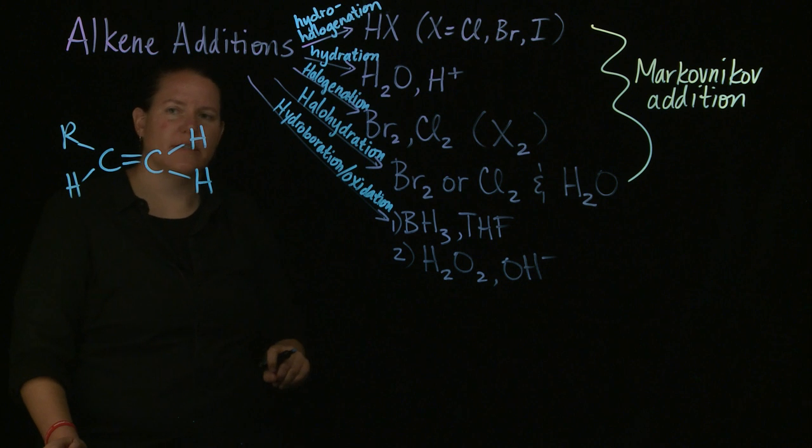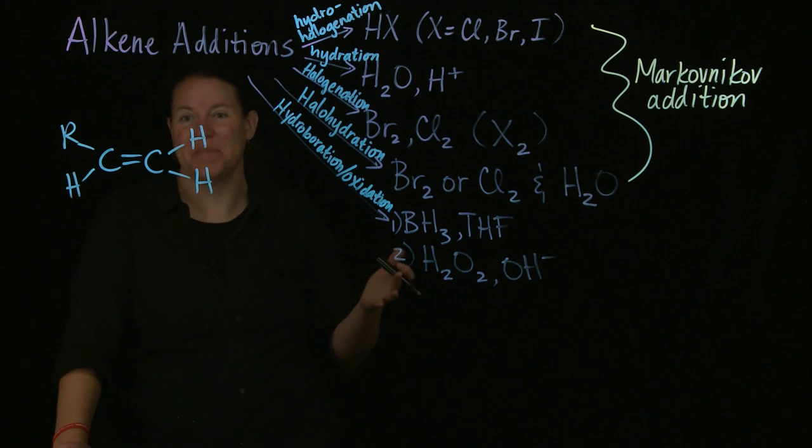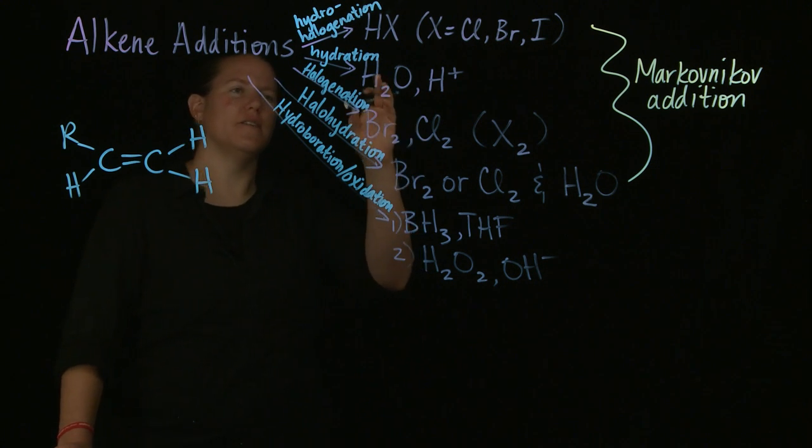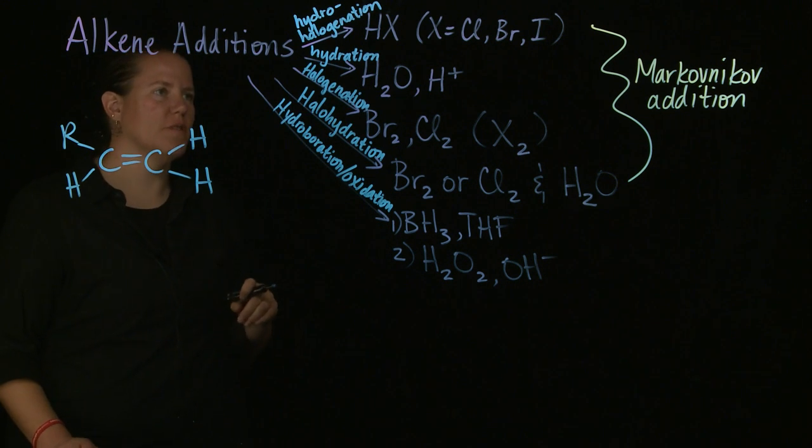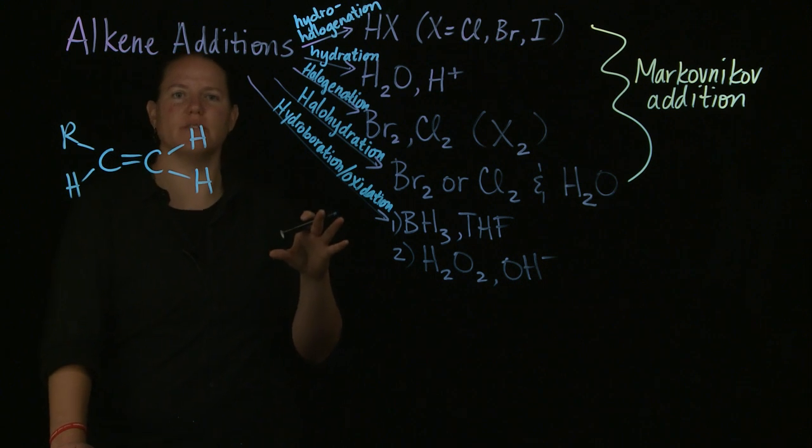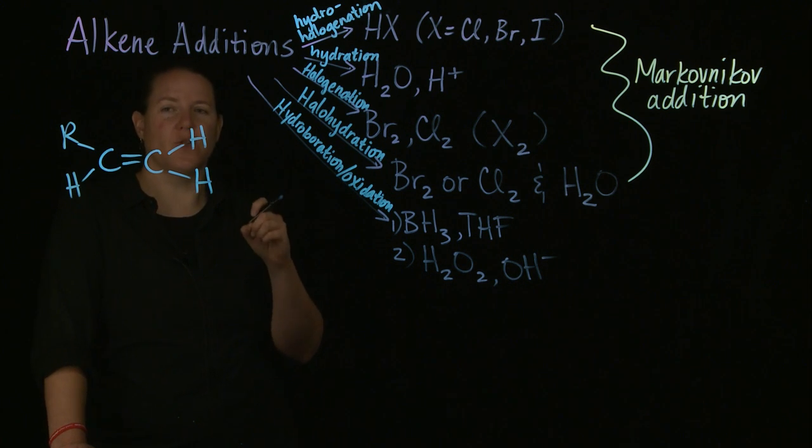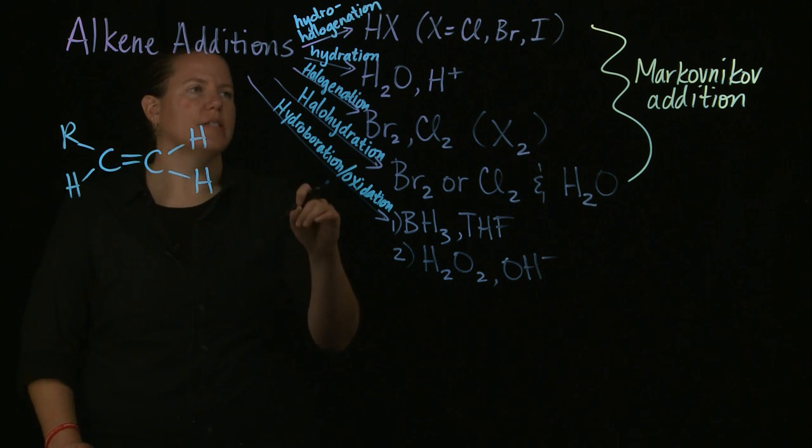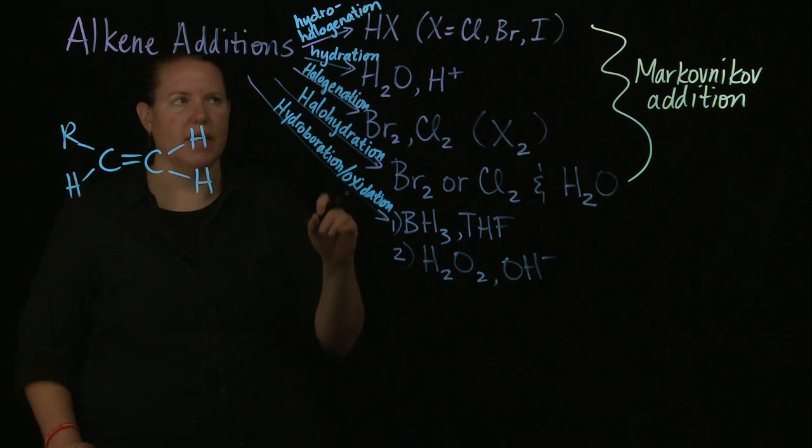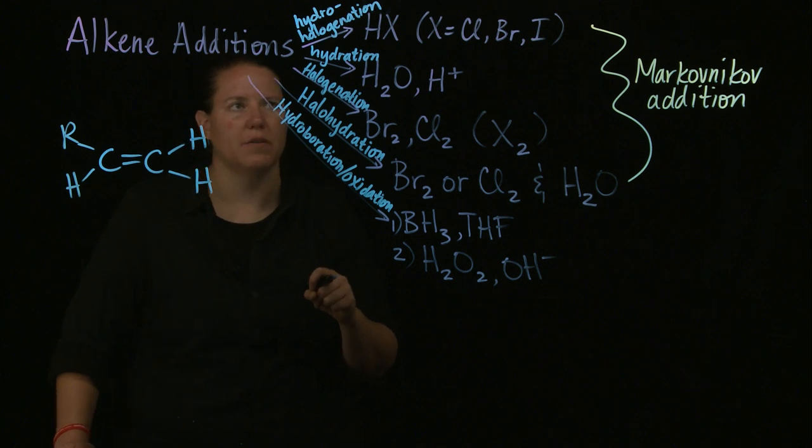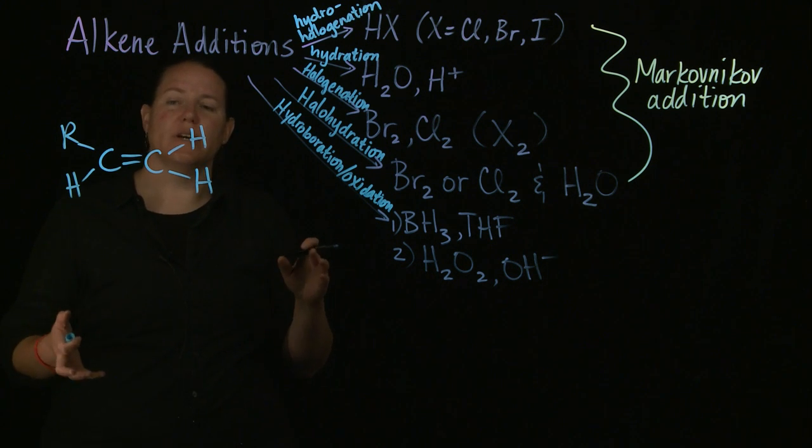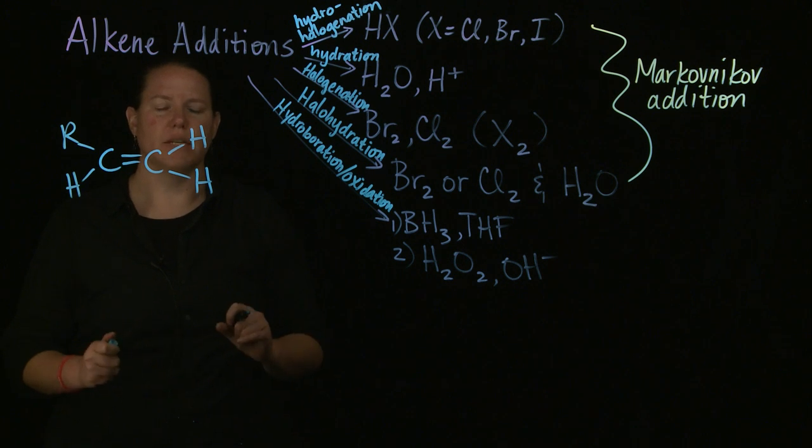We could add HX. X in organic chemistry is a general way of talking about Cl, Br, I, and so forth. Halides are X's, usually with the exception of F. F is not a great X in organic chemistry because it's too reactive. This is called a hydrohalogenation because you're adding H on one side which is the hydro. You're adding the X on the other side. That's the halogenation.